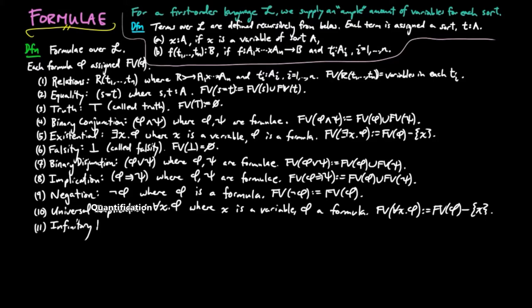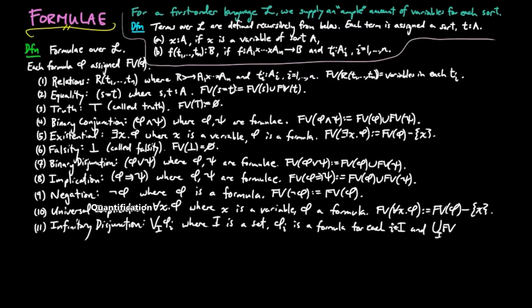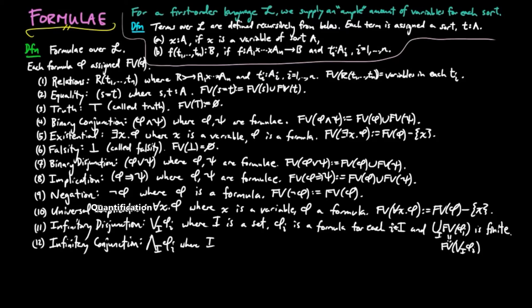Eleven, infinitary disjunction: the infinitary disjunction of the formulae phi_i, where i ranges over a set, phi_i is a formula for each i, and the union of the free variables of phi_i is finite. Twelve, infinitary conjunction: the infinitary conjunction of phi_i, where i is a set, phi_i is a formula for each i, the union of the free variables of phi_i is finite, and we set this union to be the set of free variables for the infinitary conjunction.